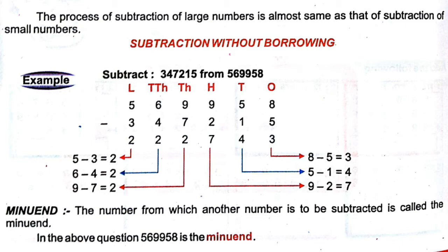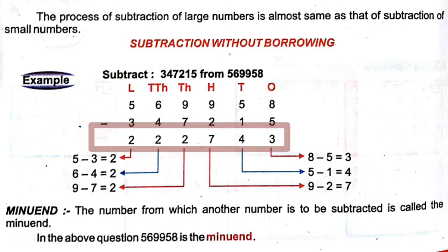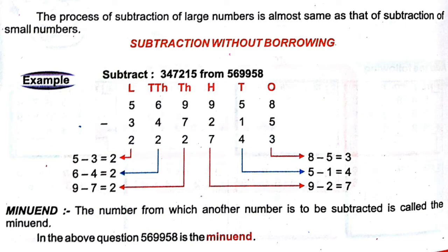And the other term is Subtrahend. Subtrahend means the number which is to be subtracted. Here, the Subtrahend is 3,47,215. First we will write the Minuend number, then the Subtrahend number, then put a minus mark.